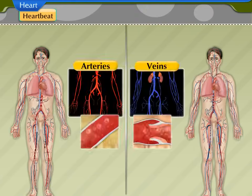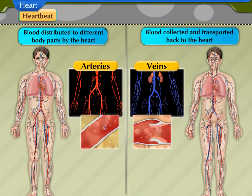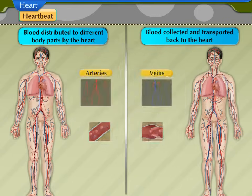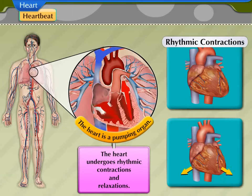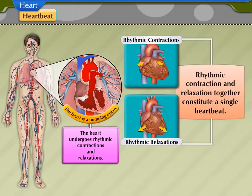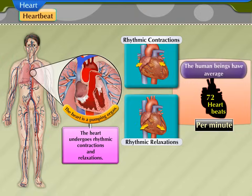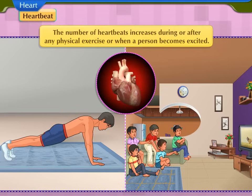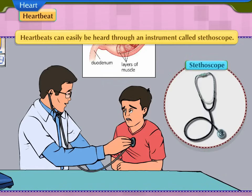The process in which blood is distributed to different body parts and is again collected and transported back to the heart is described as blood circulation. The heart is a pumping organ. It undergoes rhythmic contraction and relaxation. The rhythmic contraction and relaxation of the heart together constitute a single heartbeat. Human beings have an average of 72 heartbeats per minute while at rest. The number of heartbeats increases during or after any physical exercise or when a person becomes excited.